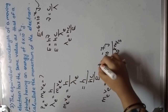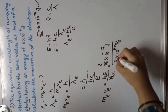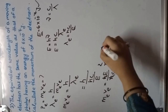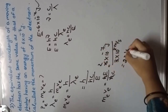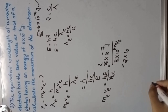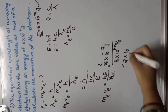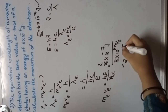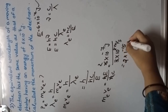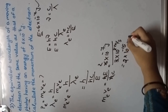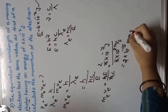Solving this, 6 divided by 3 gives 2 into 10 to the power minus 15 kg meter per second inverse. That is the momentum of the electron.